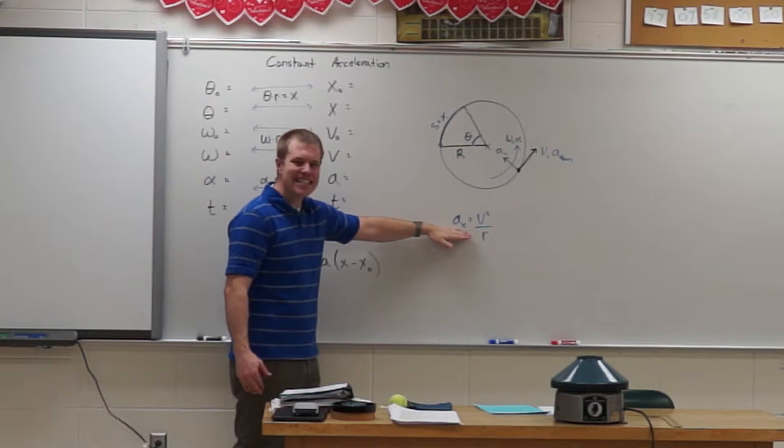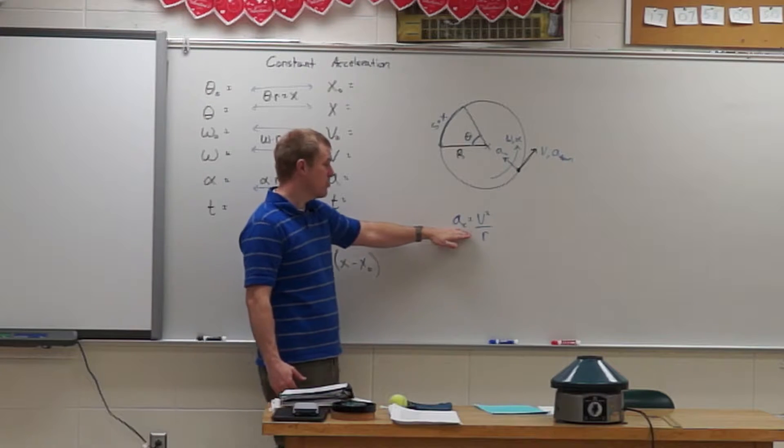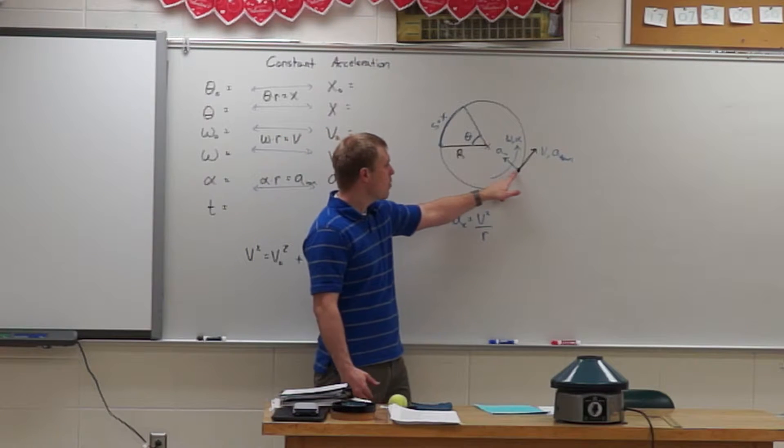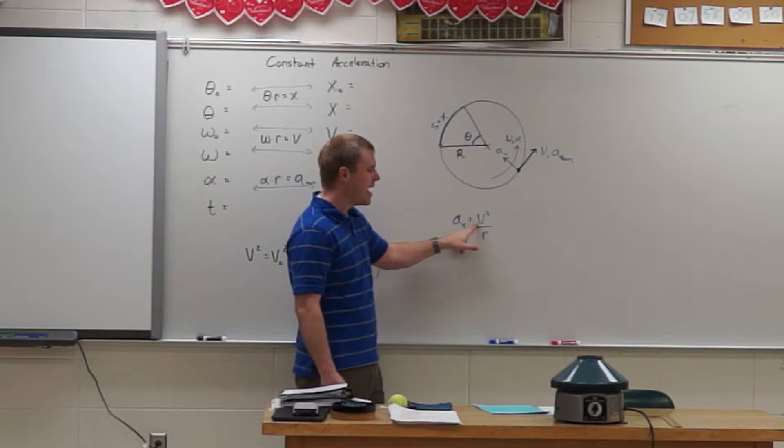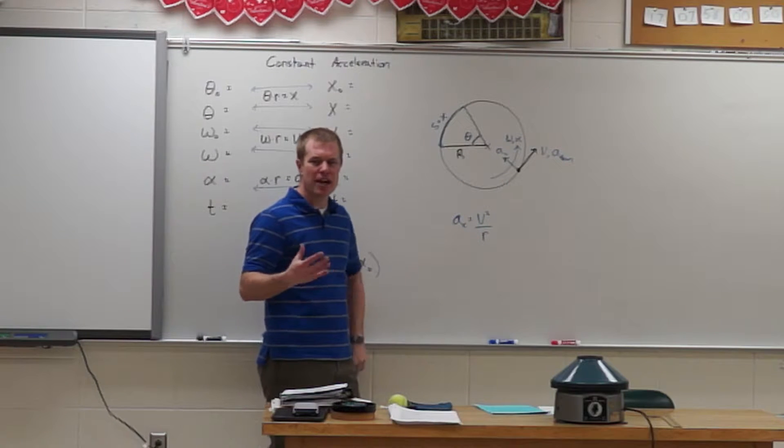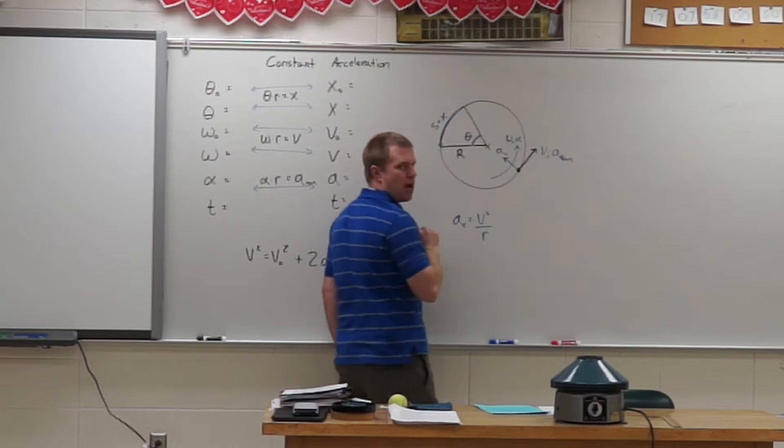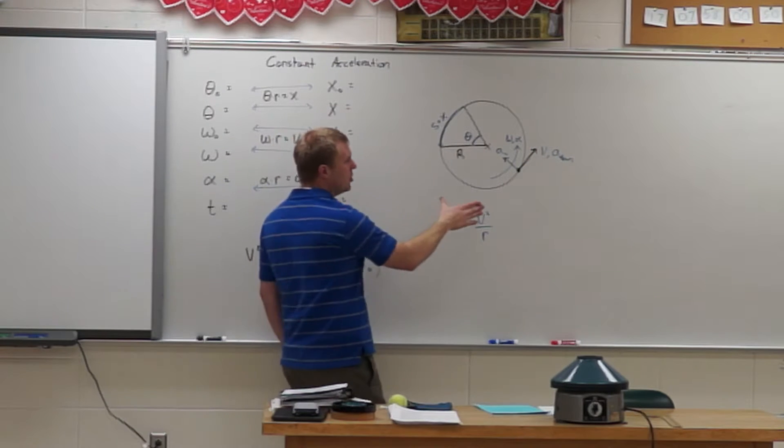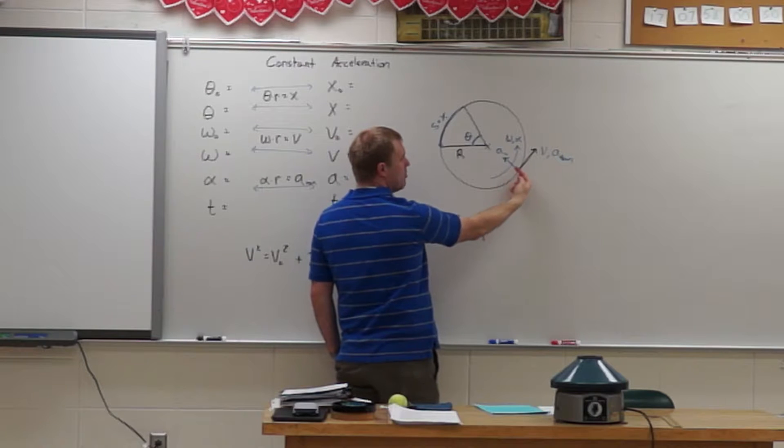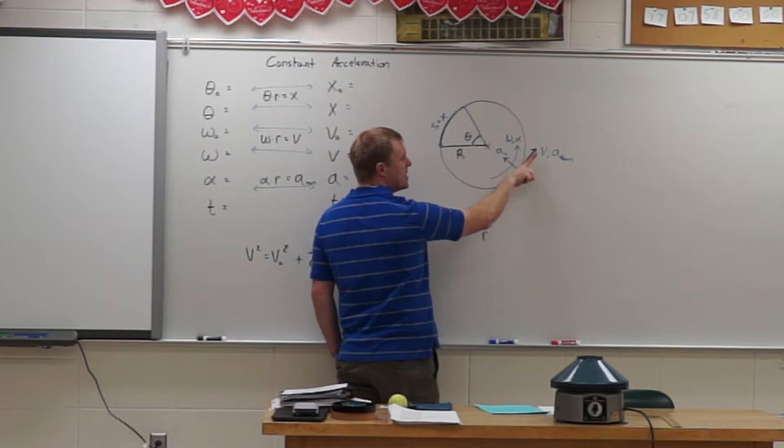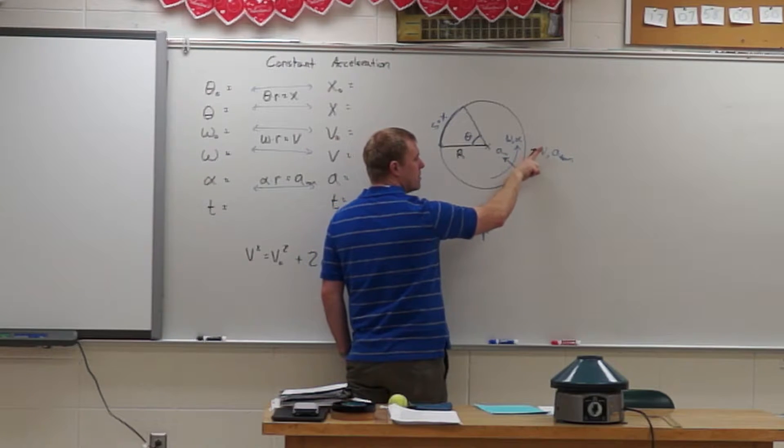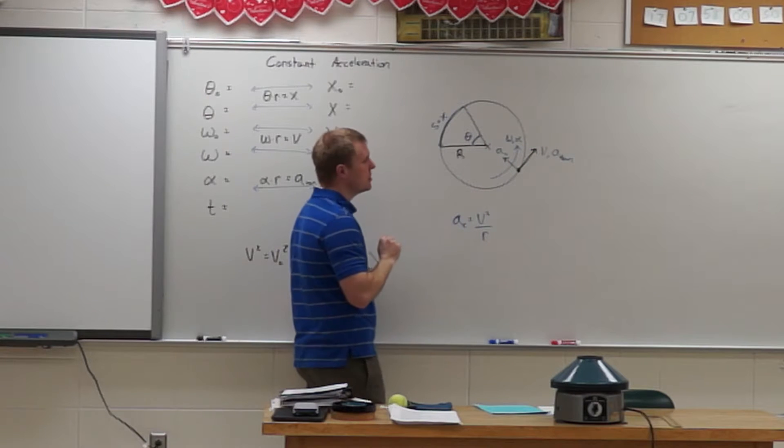We will also have AC, the centripetal acceleration or the radial acceleration, which points radially inward and tells me about the change in direction. How fast am I changing the direction from pointing this way to now pointing that way. And so, how that looks on my circle is AC points radially inward. ATAN points, along with the velocity, tangential to my circle.